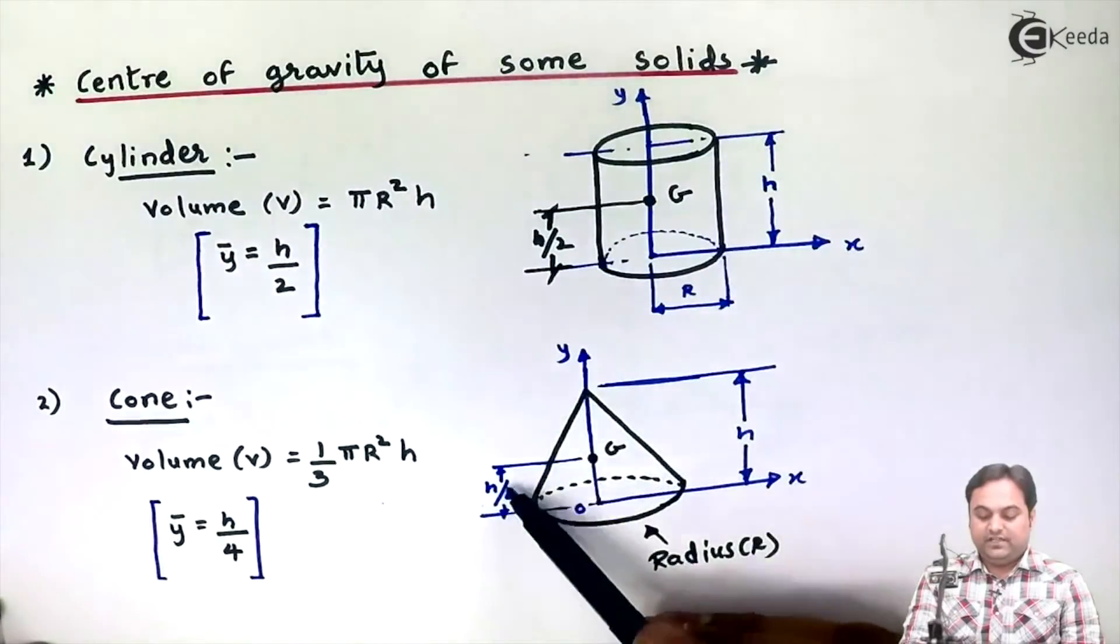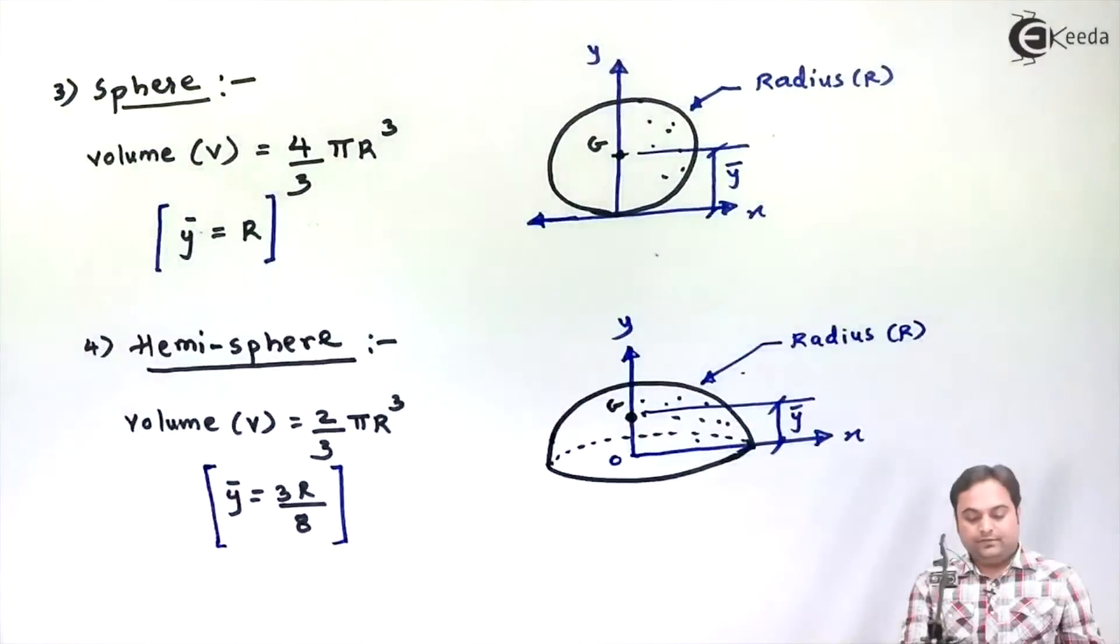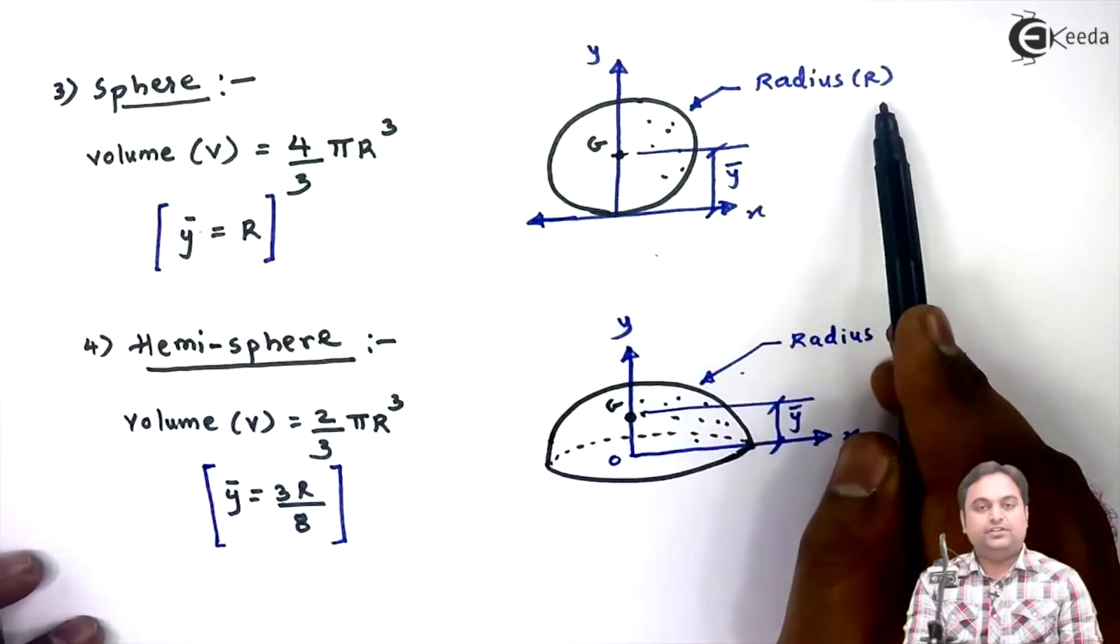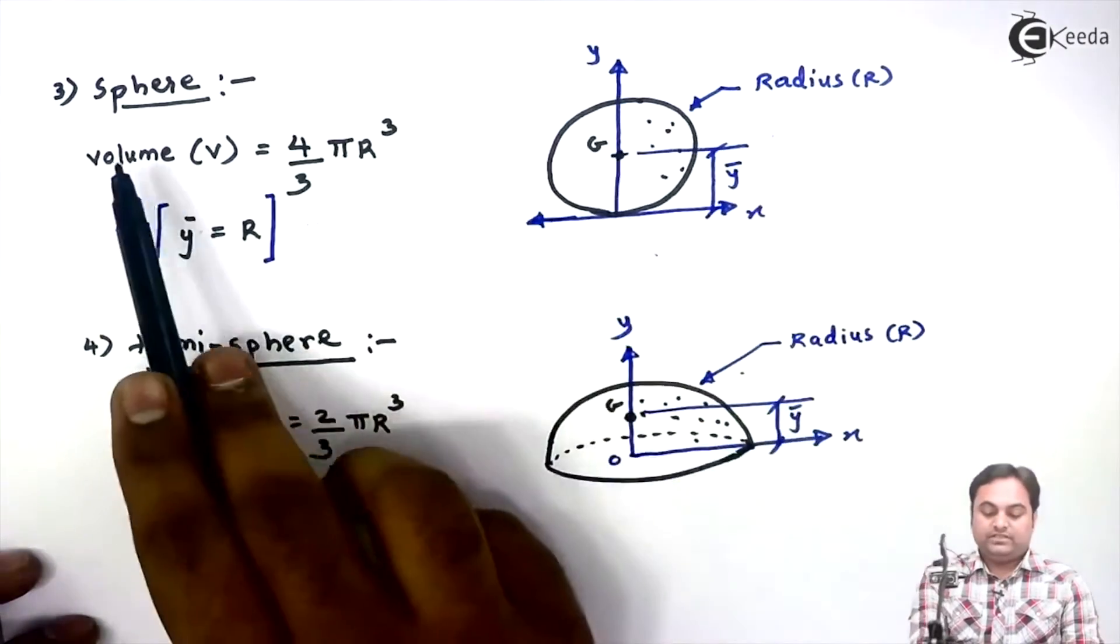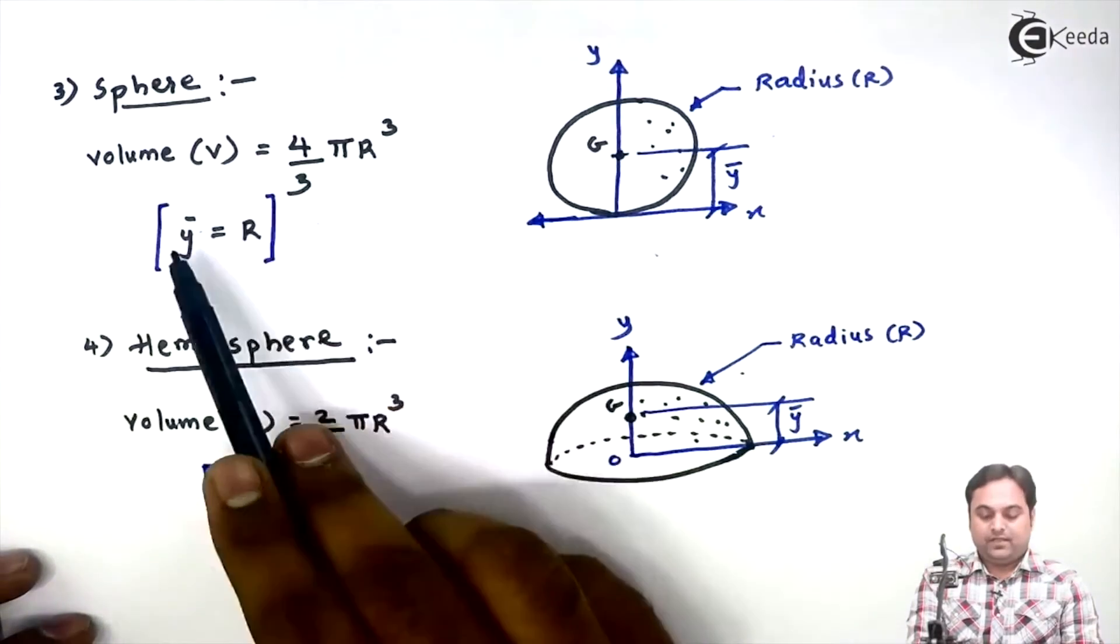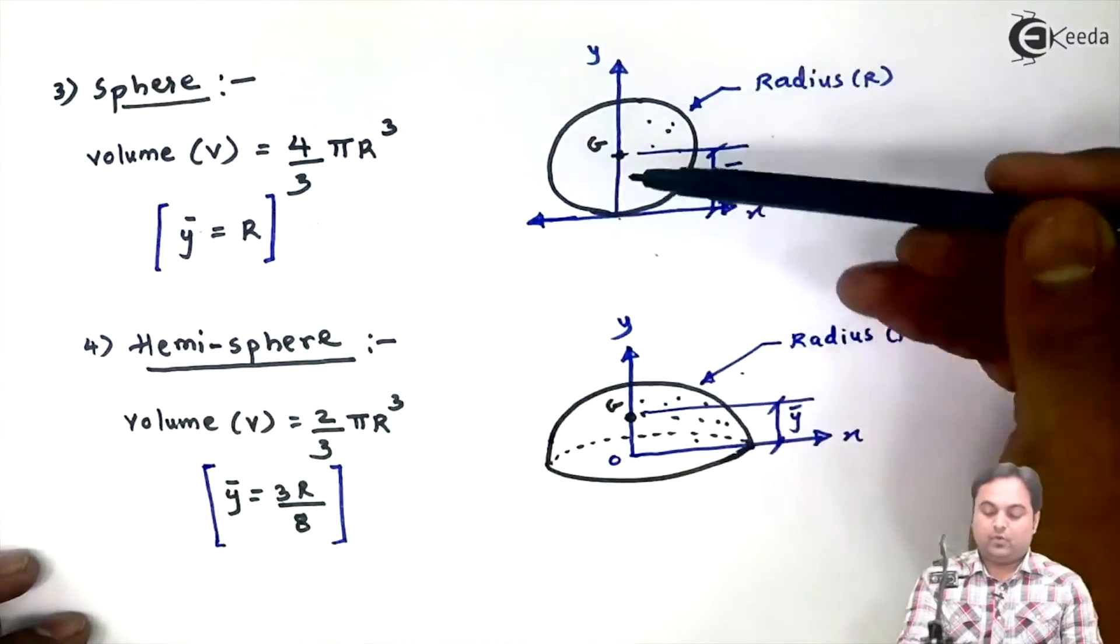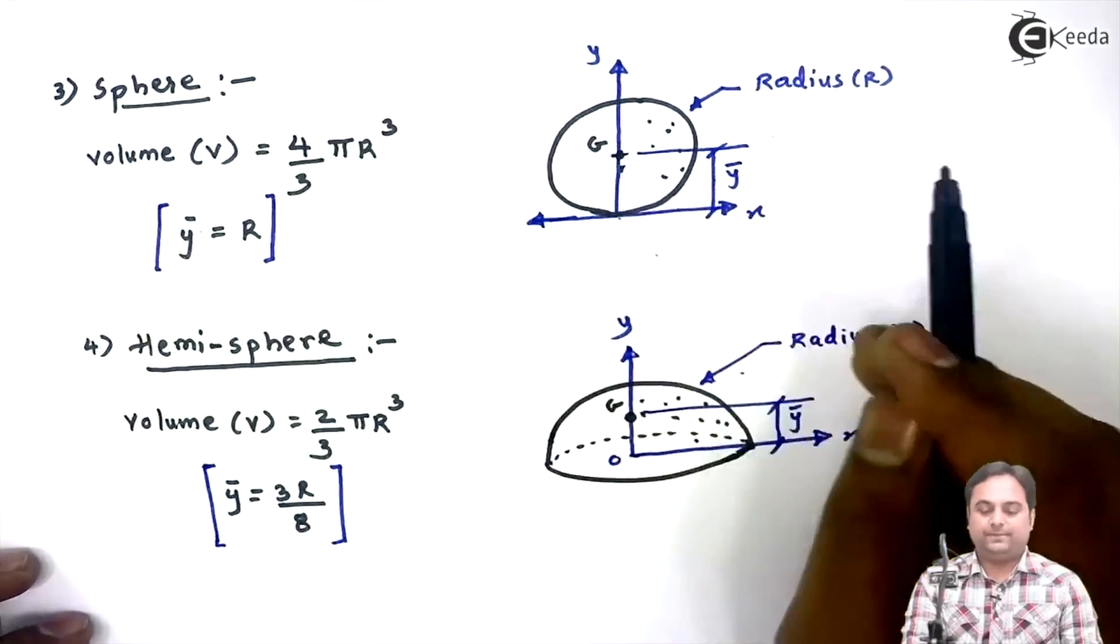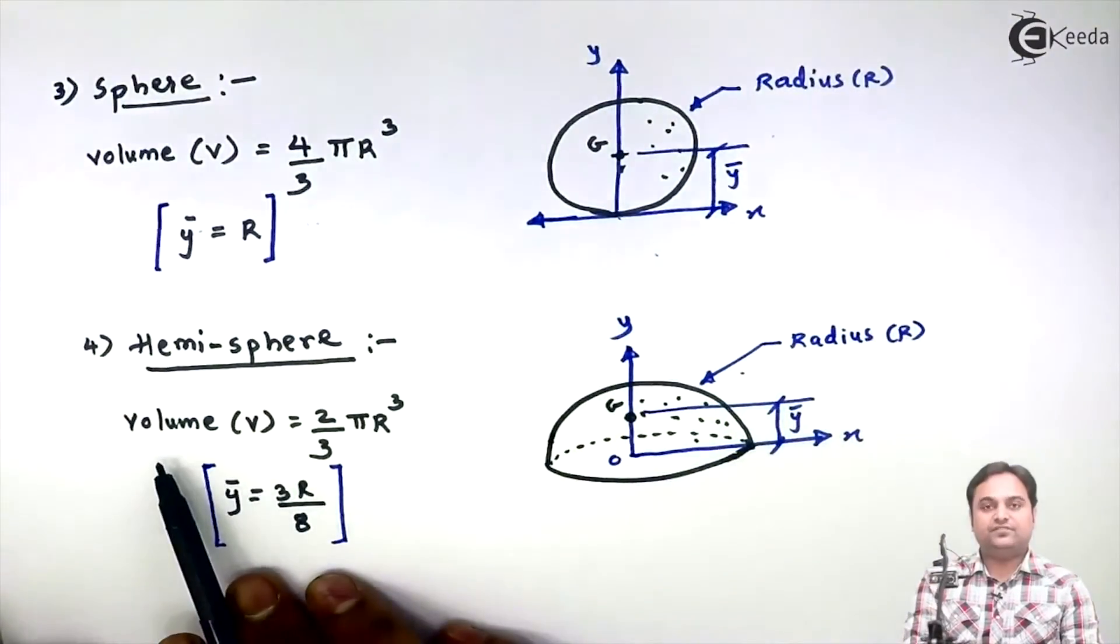Then we have sphere. The sphere is having a radius of capital R. Again it is placed on an axis system X and Y. This sphere is having a volume of 4/3πR³. For this, the CG is located at a distance of Y bar with respect to X axis, and this Y bar is nothing but the radius of the sphere. So this was the location of CG for a sphere.